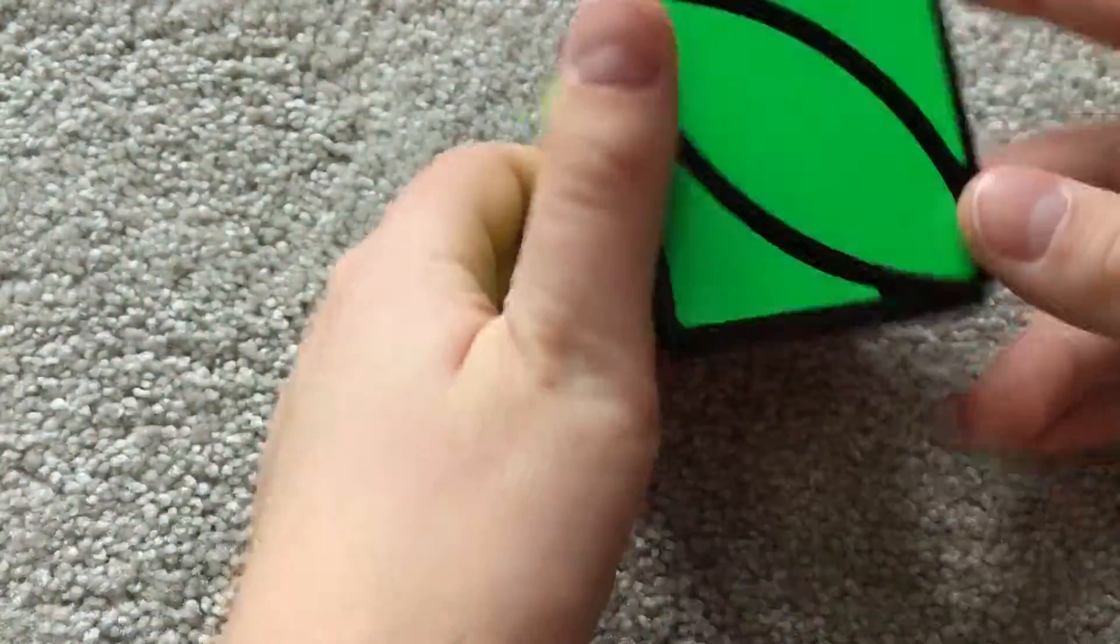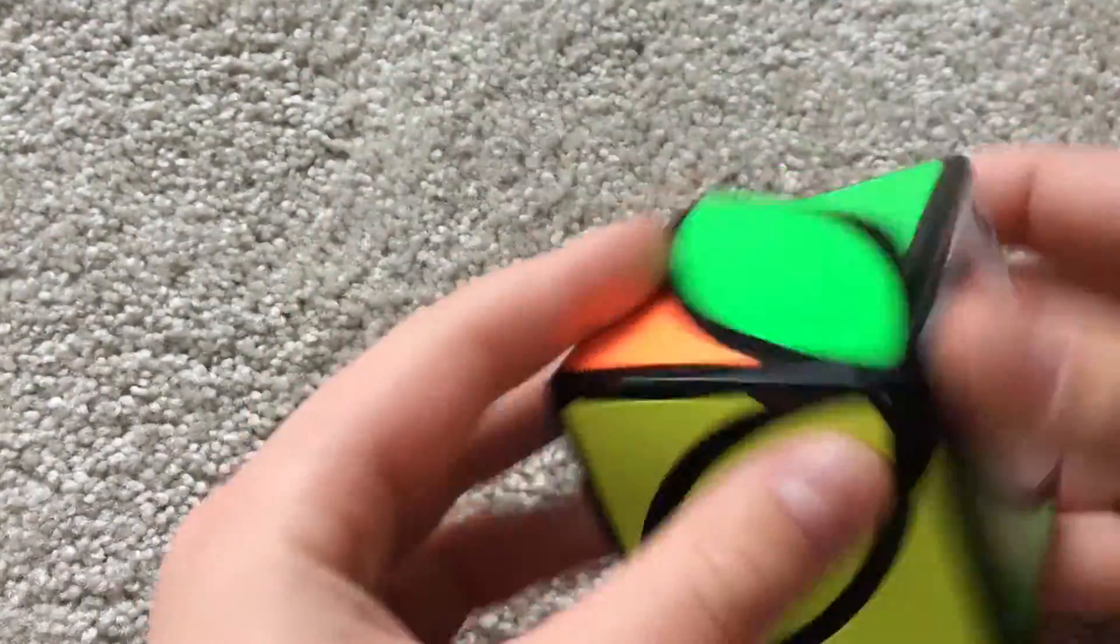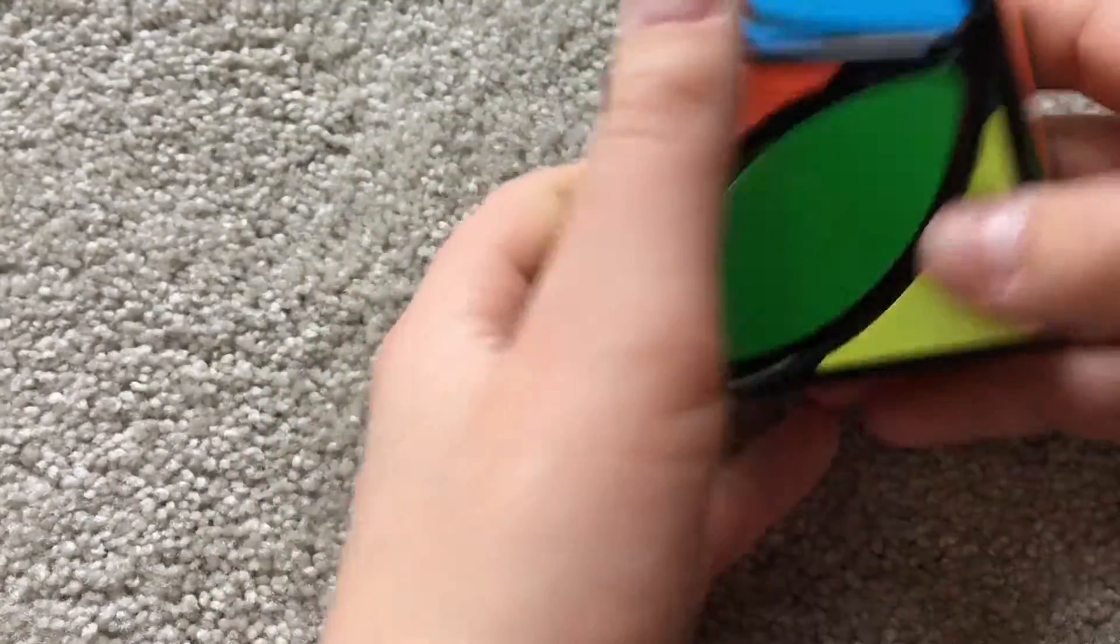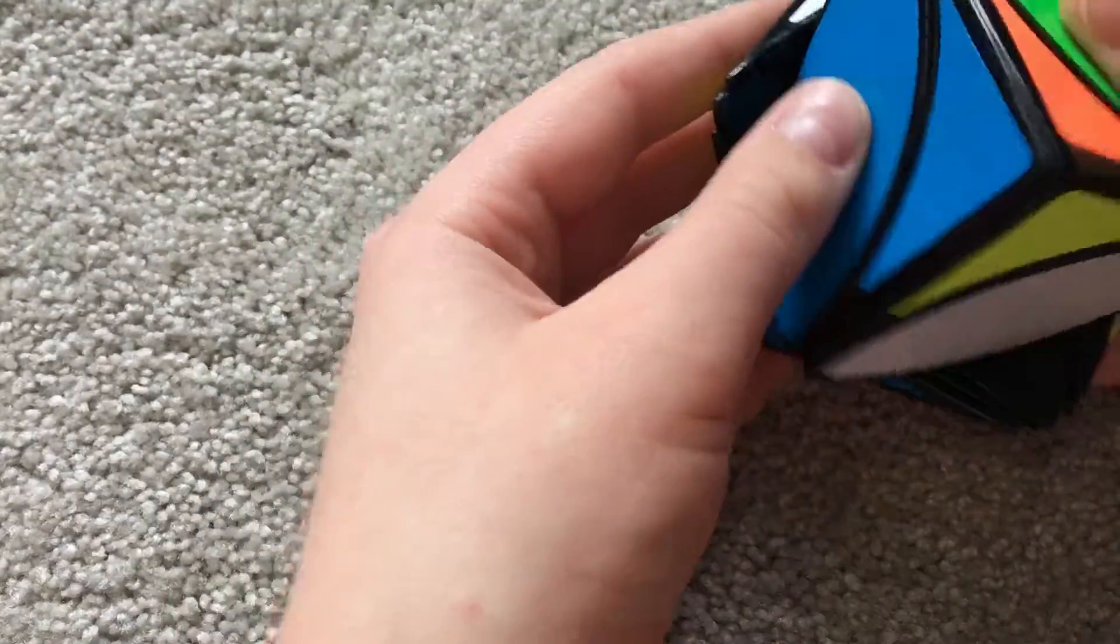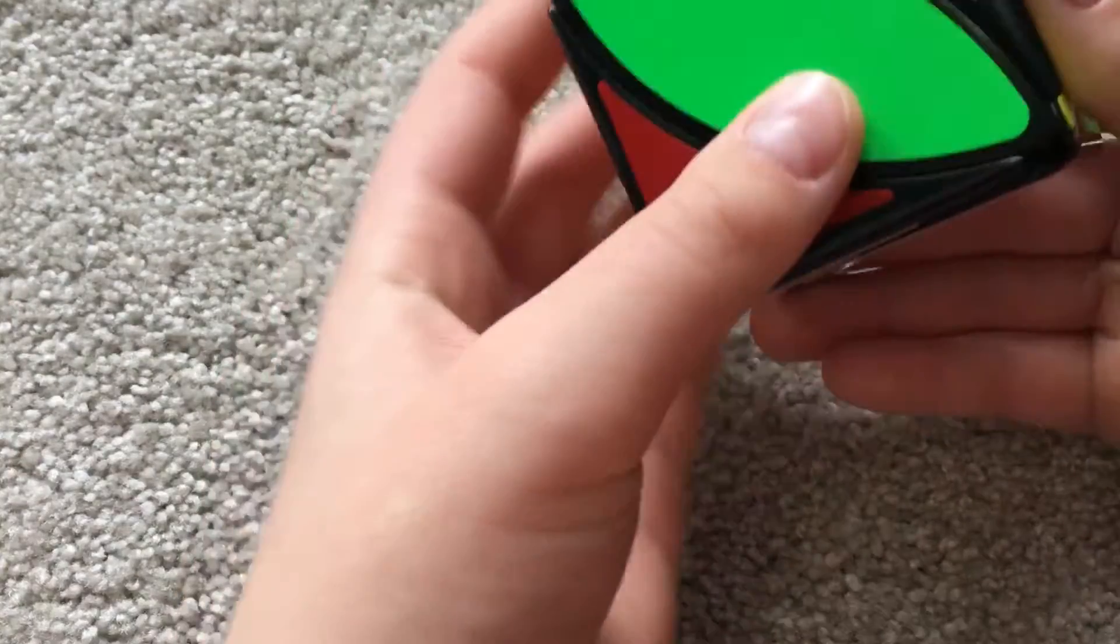Here's an ivy cube if you don't know. Let's go ahead and scramble it up. It's a lot like a skewb, so if you know how to solve a skewb this is going to be super easy for you.